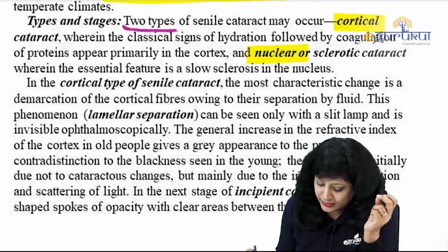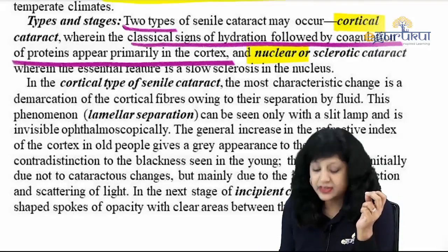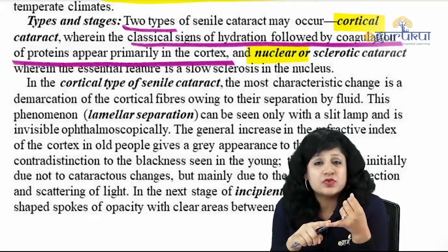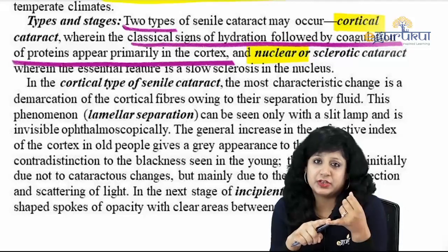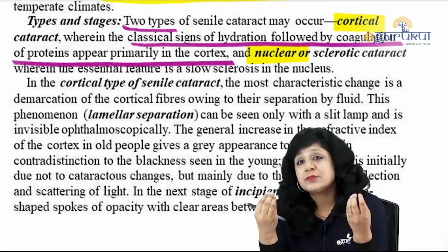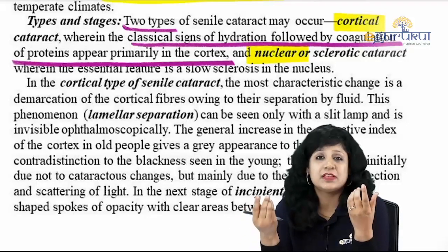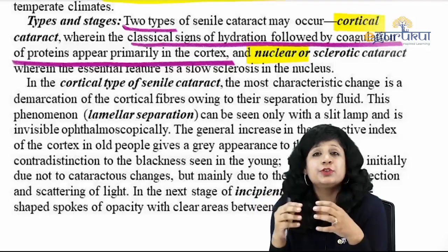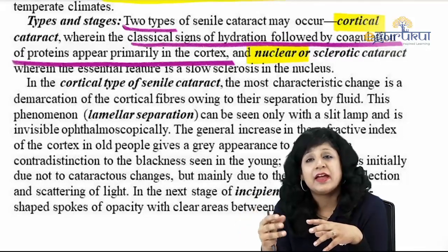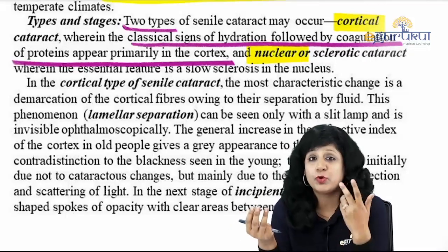In cortical cataract, the classical signs of hydration are followed by coagulation of proteins. The cortex is made up of proteins — specifically crystallins — and over-hydration causes these proteins to denature, leading to opacification and loss of transparency.